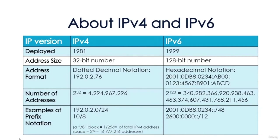IPv4 is Internet Protocol Version 4, commonly called just IP. It is a simple protocol designed to carry data across networks — so simple that it requires a helper protocol called ICMP. IP is connectionless and unreliable; it provides best-effort delivery of packets. If connections or reliability are required, they must be provided by a higher-level protocol carried by IP, such as TCP.